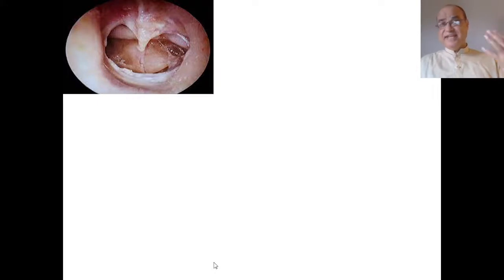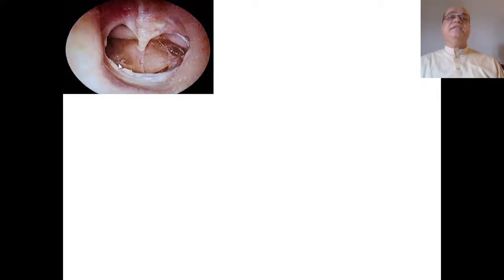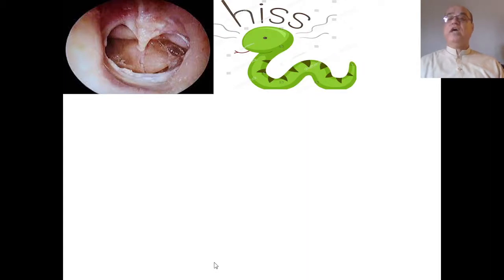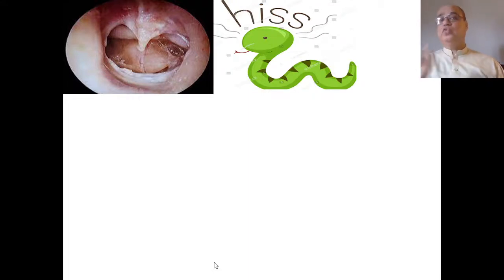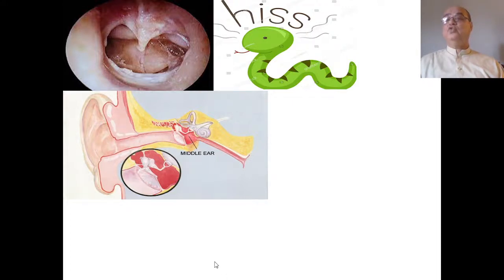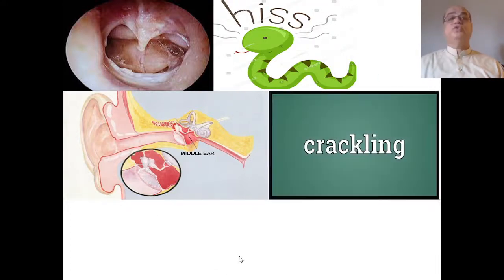If the tympanic membrane is intact on Valsalva, it will move outwards. But if the tympanic membrane has a perforation, when the patient performs Valsalva you will hear a hissing sound due to leakage of air through that perforation into the external auditory canal. If there is discharge in the middle ear but the tympanic membrane is intact, you will hear a crackling sound on Valsalva.